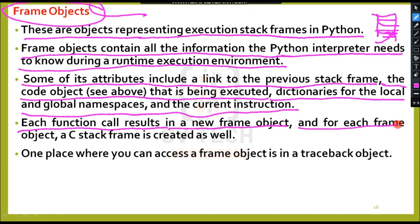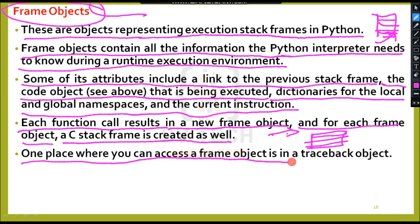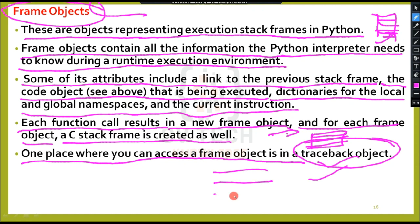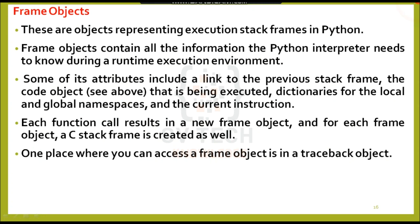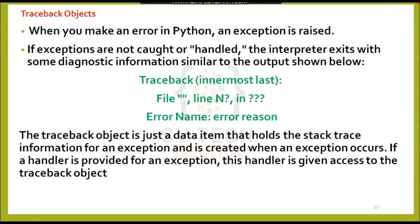Frame objects and namespaces are created each time a function is called, returns, or results in a new frame object, and for each frame object a C stack frame is created as well. One place where you can access a frame object is in a traceback object. To access the frames we use traceback — every line of code is referred to as a frame object.